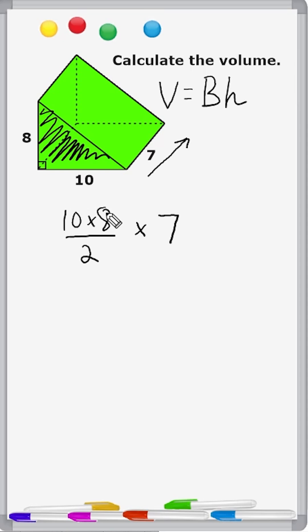So 10 times eight is 80 and 80 divided by two is 40. We're going to multiply 40 square units by seven, which makes it three-dimensional. So the base of this triangle here is 40 square units and multiplying it by seven would turn it three-dimensional and give us 280 cubic units.